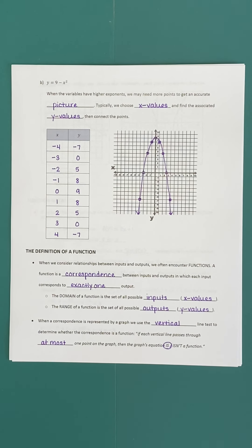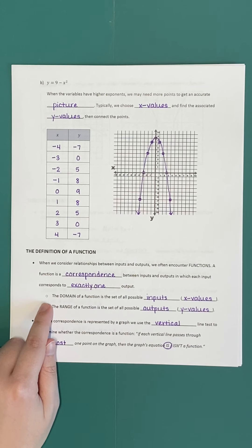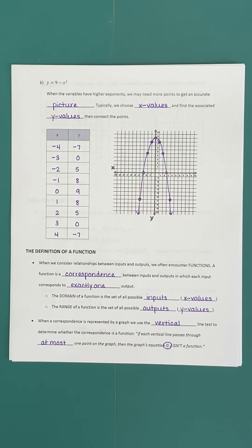Once we plug in all our domain values, we get out y values — and if we take all of those together as one big set, we call that the range of our function. The range is all the different possible outputs or y values we can get. In a lot of cases, both domain and range are going to be all real numbers — we can plug in anything we want and get out any possible value. When there are restrictions, we'll specifically discuss those situations.